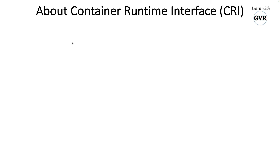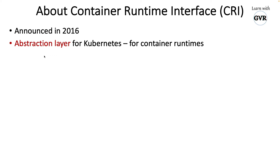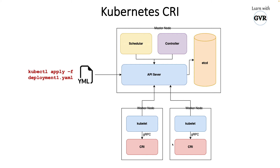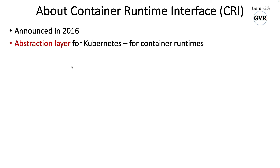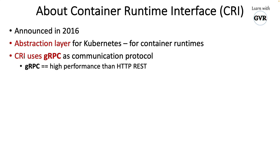CRI was announced in 2016 — you can Google it. CRI is an abstraction layer: kubelet only knows CRI, and CRI internally can talk to Docker, containerd, or any other container runtime. That's the abstraction. It uses gRPC — which is Google's Remote Procedure Call, introduced by Google — for high performance, better than HTTP REST.